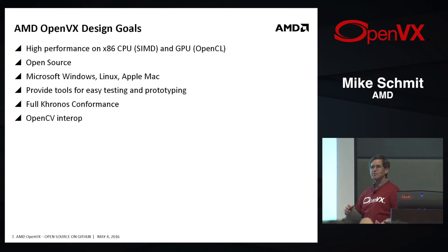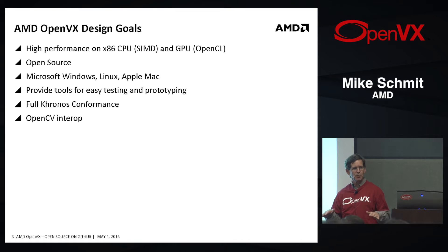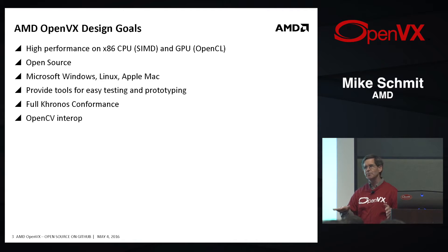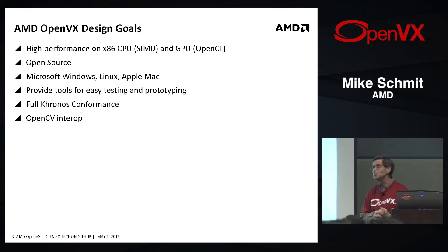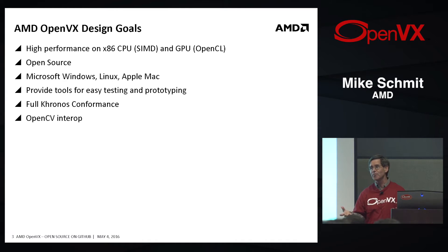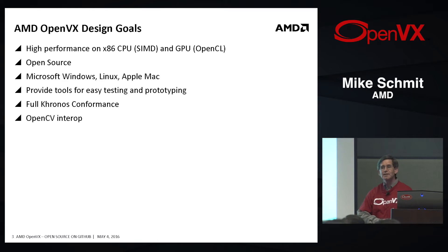Our first design goal was a really good CPU implementation for x86, and then in addition, a GPU version in OpenCL. So all the kernels are implemented in both CPU and GPU. The other thing is we're open source, so you don't have to listen to any performance numbers that I might give you — you all have the code on your machines already and can run your own performance benchmarks. And it's also Windows, Linux, and Macintosh.